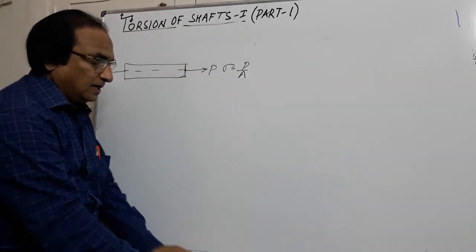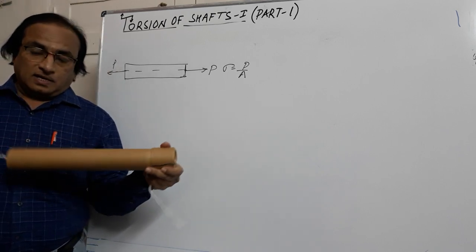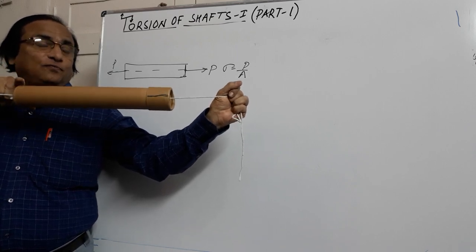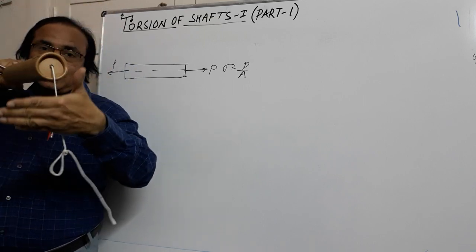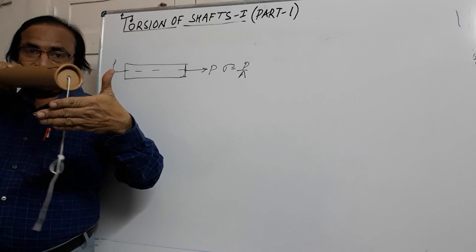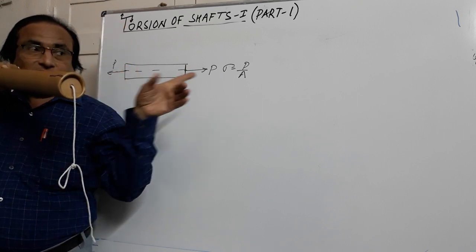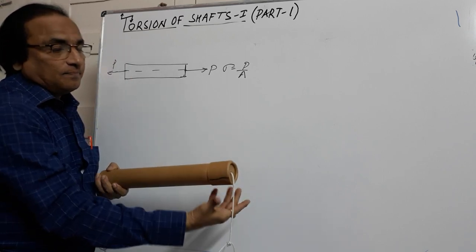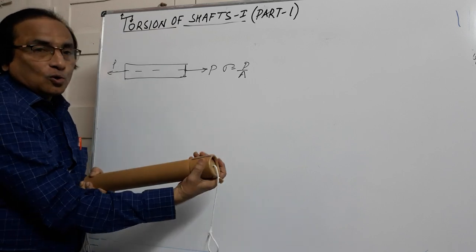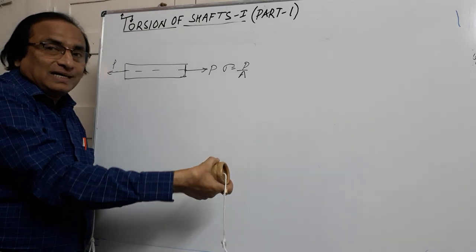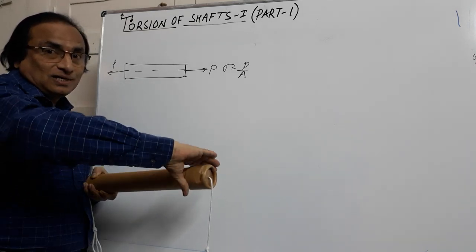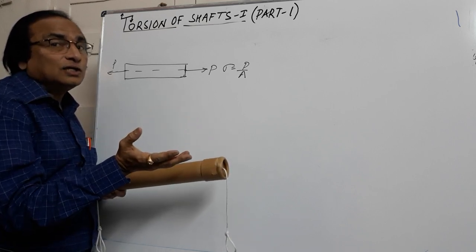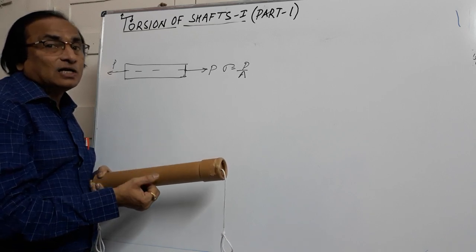If you see this figure — I have taken a model here. Suppose this is a member which I am subjecting to pull by the force P on both sides. This force is acting perpendicular to the surface; normal force divided by cross-sectional area gives you the normal stress. Now suppose if I want to open this lid, I have to rotate it. The type of force I'm applying is a tangential force — tangential forces are parallel forces, which we call shear force. Shear force divided by area gives shear stress.